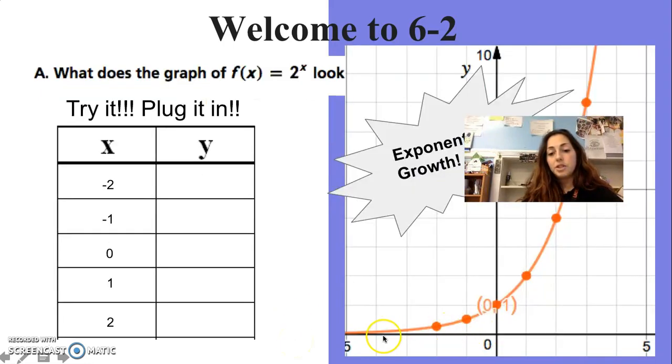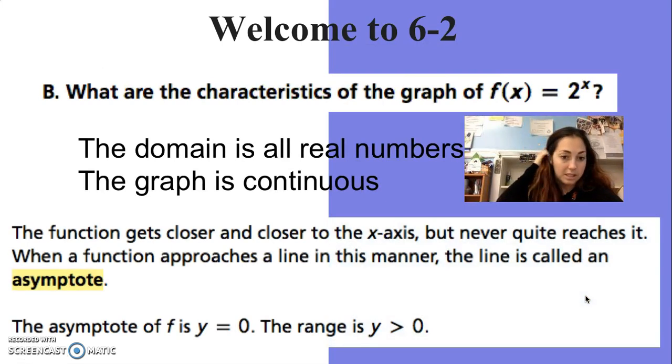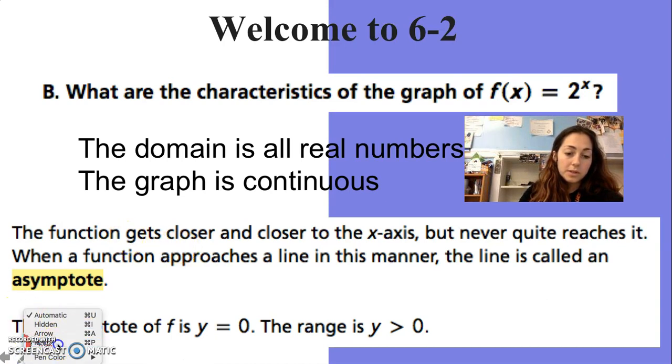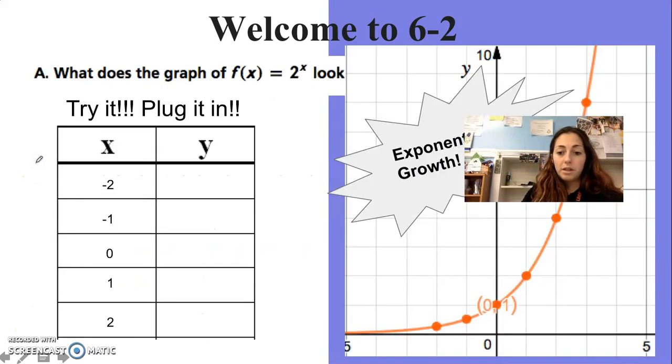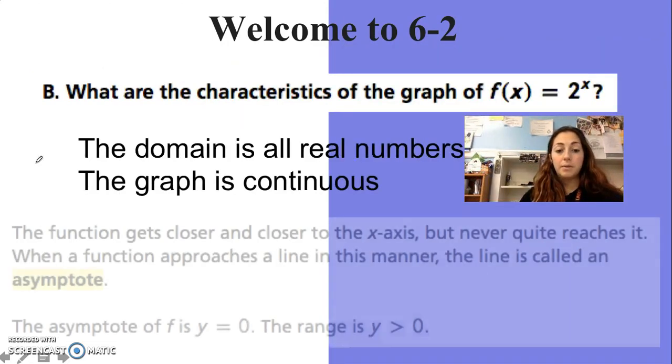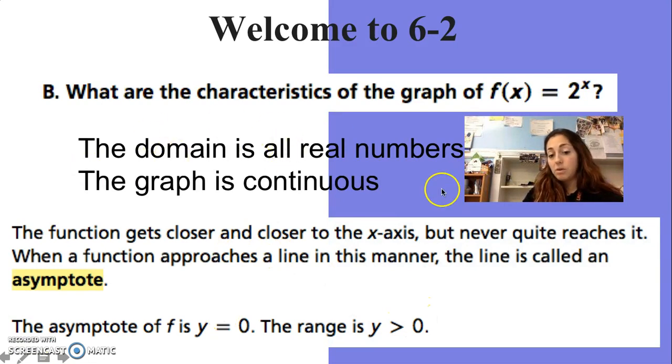The domain is all real numbers, the graph is continuous. The range - my y values are all actually above 0 and not including it. The function gets closer and closer to the x-axis but never quite reaches it. When a function approaches a line in this manner, the line is called an asymptote. The asymptote of f is y equals 0. The range is y greater than 0.